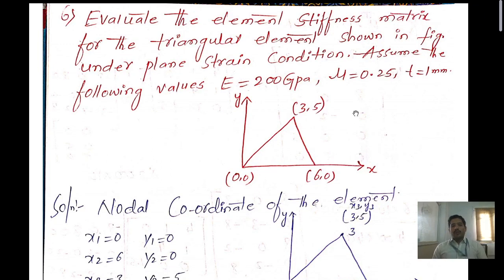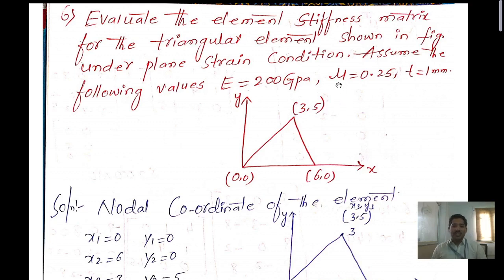In this problem we need to evaluate the elemental stiffness matrix for the triangular element as shown in the figure, under the plane strain condition. The modulus of elasticity is given as 200 GPa, the coefficient of Poisson's ratio mu is 0.25, and the thickness is given as 1 mm.